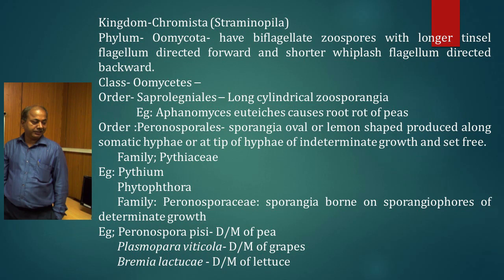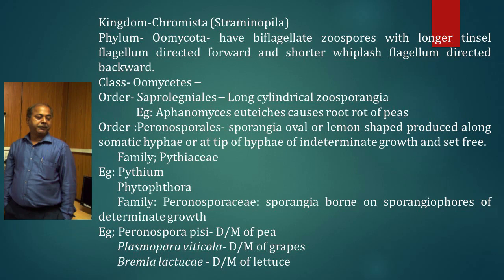In Saprolegniales, there are long cylindrical zoosporangia. The example is Aphanomyces euteiches, which causes root rot of peas.